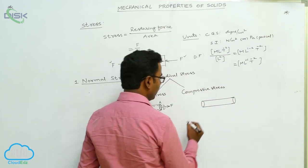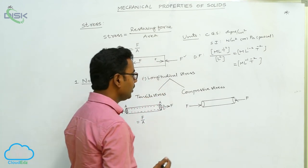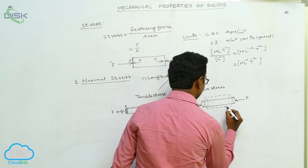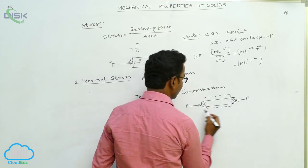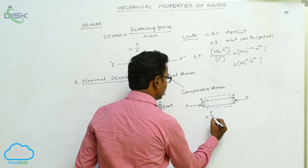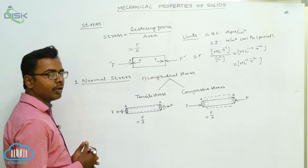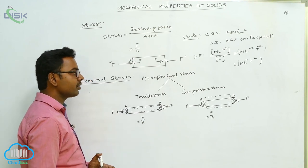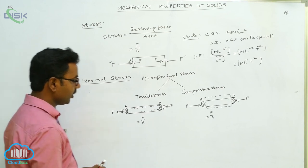Compressive stress is opposite to tensile stress — it produces compression, or a decrease in the length of the wire or rubber cord. Again, two equal forces F and F act at the ends in opposite directions, but this time to compress the body, decreasing its length. This type of stress is called compressive stress, calculated using the formula force by area. So longitudinal stress has two types: tensile stress, which increases length, and compressive stress, which decreases length. Volume stress is the second type of normal stress.